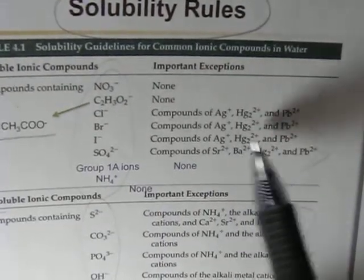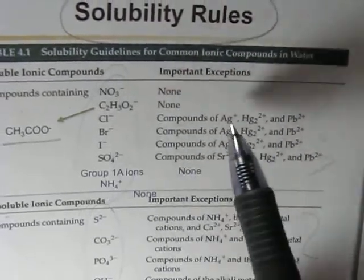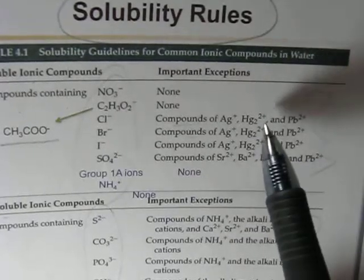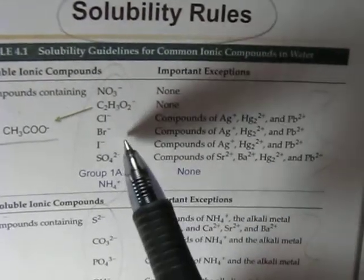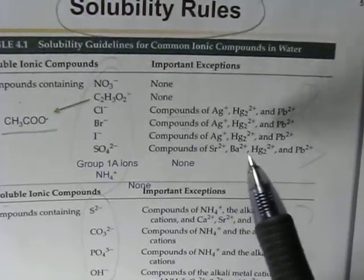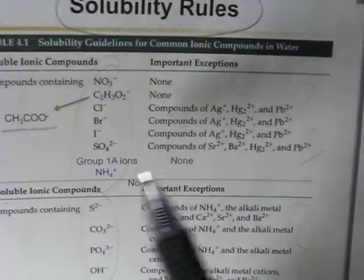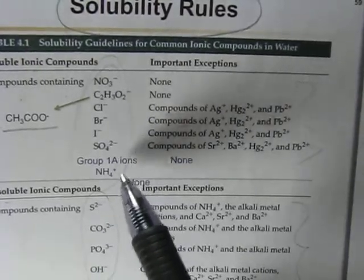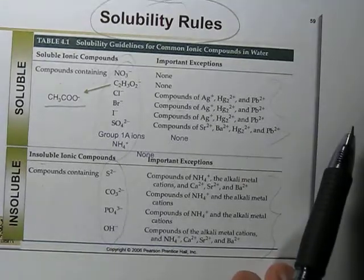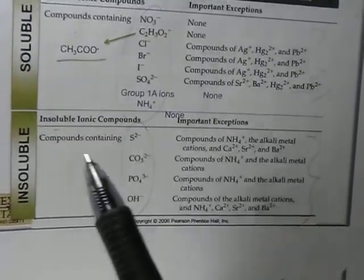Silver, mercury, and lead halides (chloride, bromide, or iodide) are insoluble. Barium, strontium, mercury, and lead sulfates are insoluble. Group 1A ions and ammonium compounds are soluble with no exceptions.